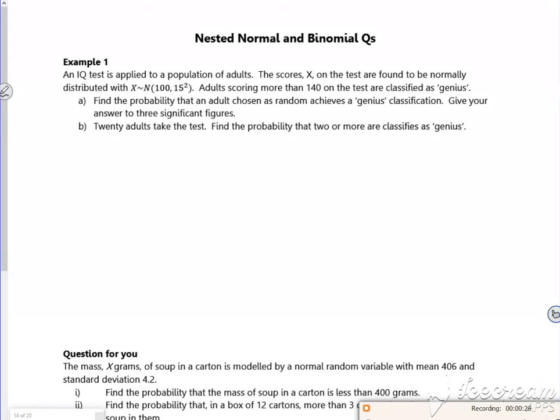Adults scoring more than 140 are classed as genius. Part a asks to find the probability that an adult chosen at random achieves genius status. So the probability that X is greater than 140. The distribution I'm using is N(100, 15²). Because it's greater than 140, my lower bound is 140 and my upper is 10,000. Sigma comes first.